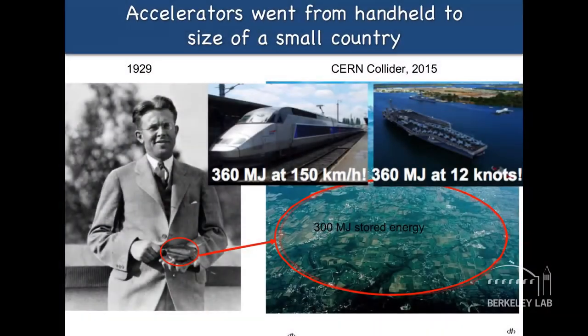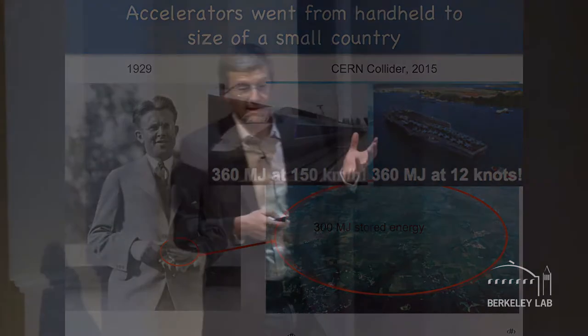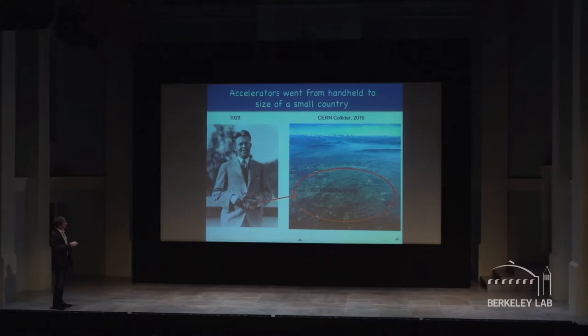And so when you think about the story here, Berkeley was founded, the Berkeley lab was founded by Ernest Orlando Lawrence and he's holding the first cyclotron in his hand. And about 80 some years later people are building machines that are the size of a small country, at least a small European country, with a stored energy in these, this is megajoule 300 megajoule.